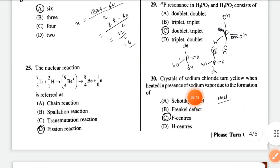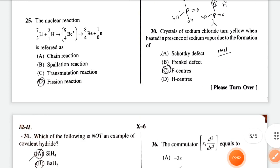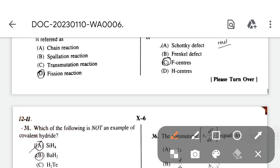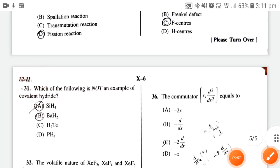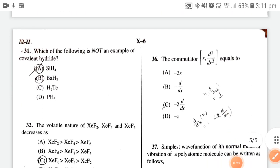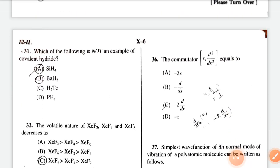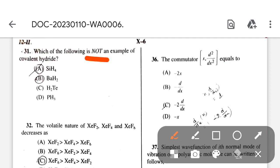Question 30: crystals of sodium chloride turn yellow when heated in presence of sodium vapor due to the formation of F-centers - option C is the right answer. Which of the following is not an example of covalent hydride? The correct option is BH₂.